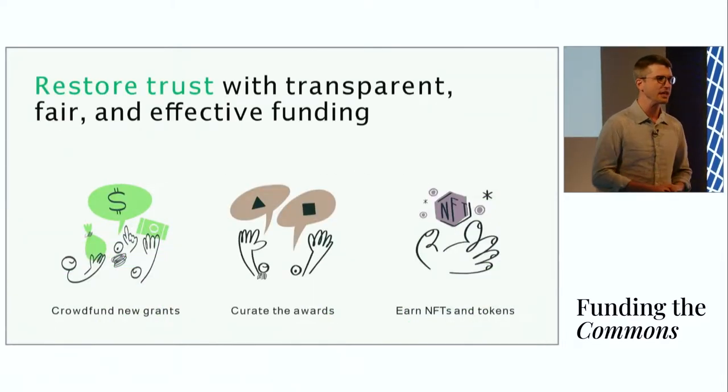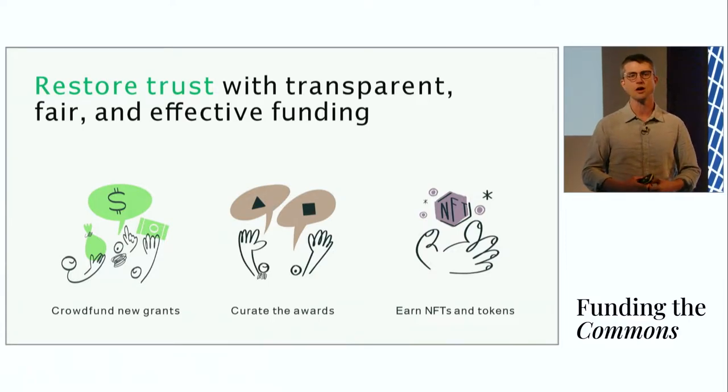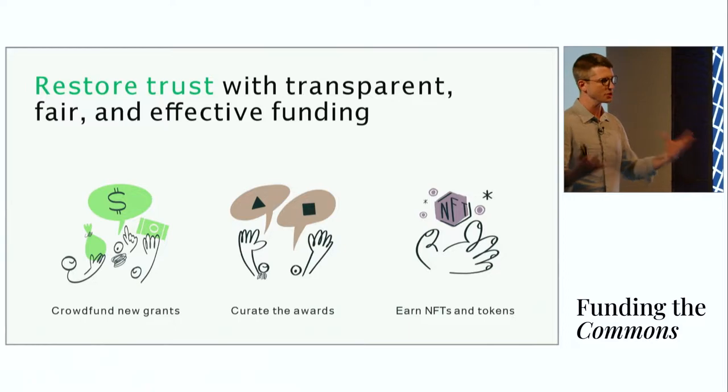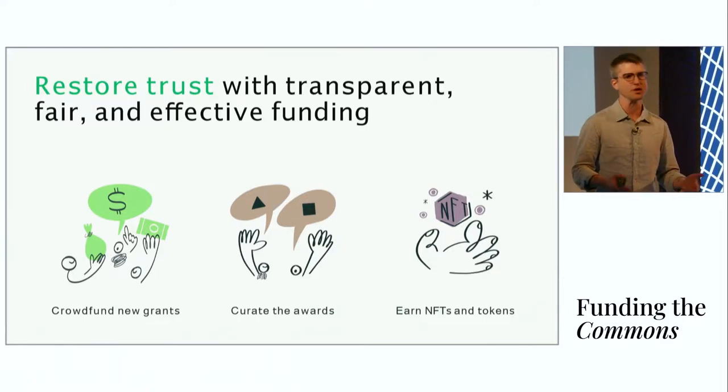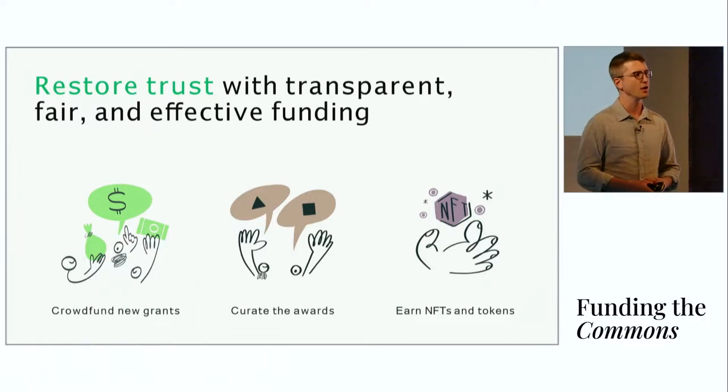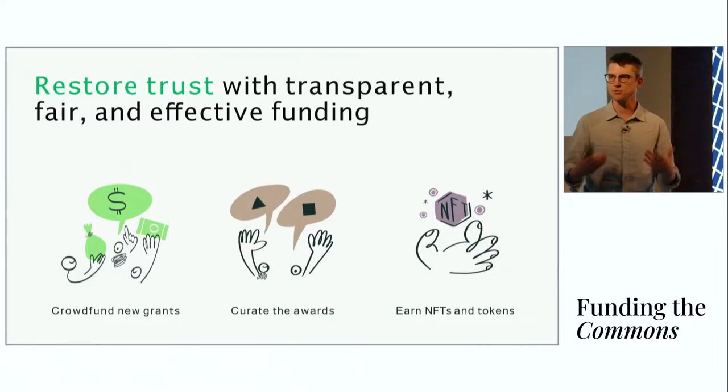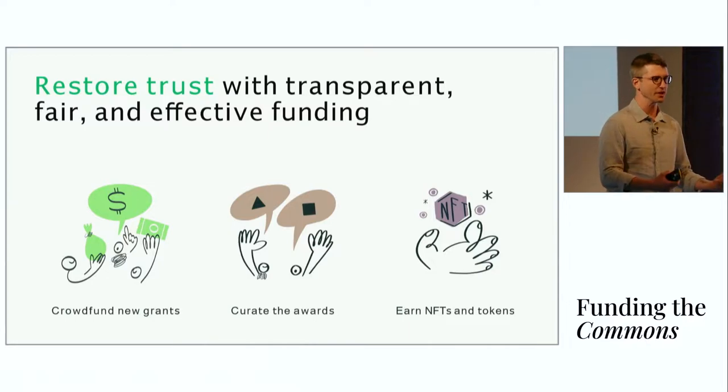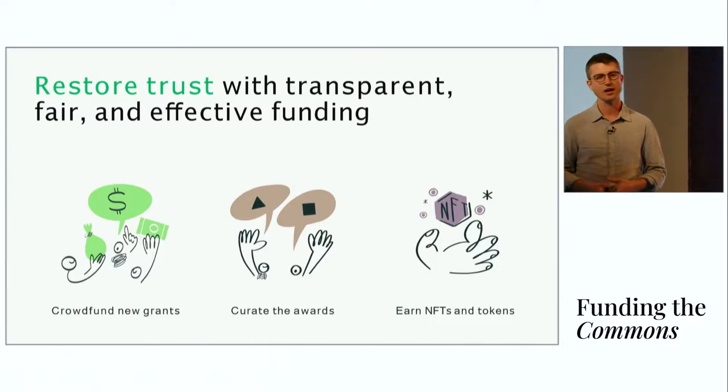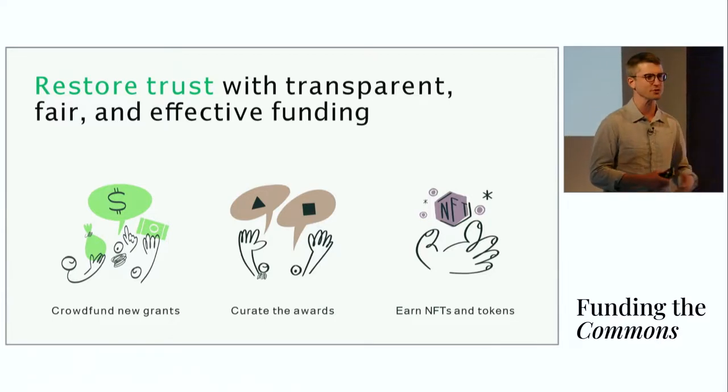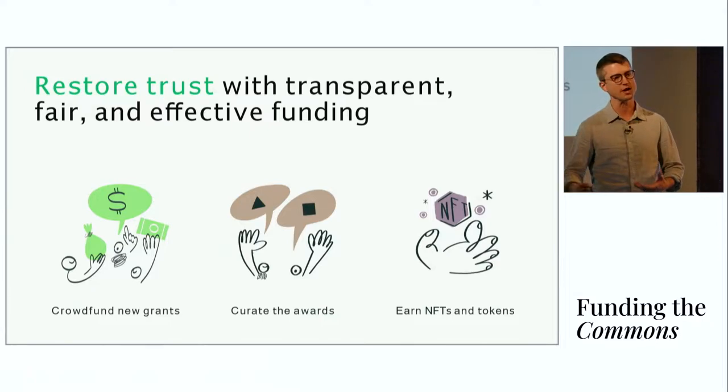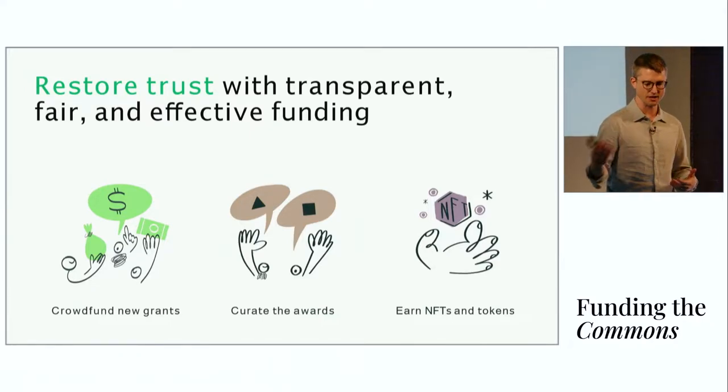Governments and charities spend trillions of dollars on public goods. But because decisions are made behind closed doors, we're really excluded from the decision-making process. So at Artisan, our big mission is to restore trust in public funding by inventing new mechanisms that are transparent, fair, and effective. At Artisan, we've worked really hard to make it very easy for communities to come together to crowdfund new grants. Once that community has pooled their money together, we've spent a tremendous amount of time figuring out how do you allow them to curate the winning projects. And finally, donors should not just be thought of as a passive participant, but rather an active owner in the work that they help fund through NFTs and tokens.